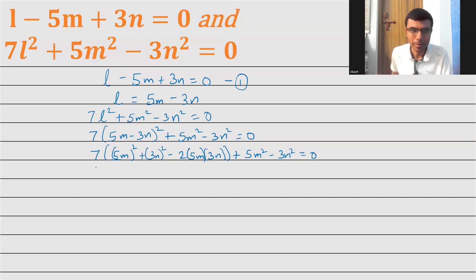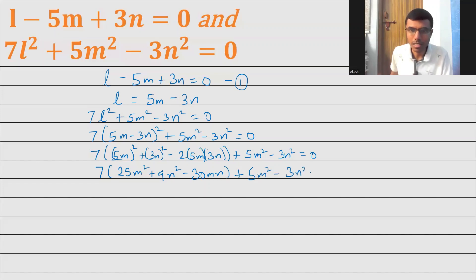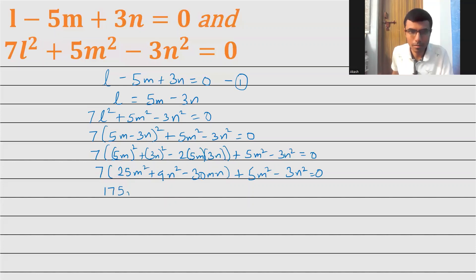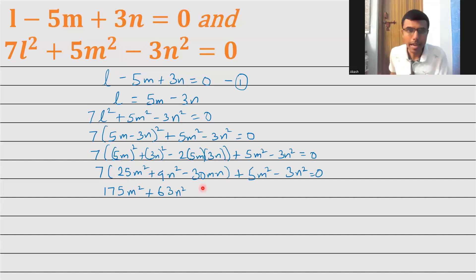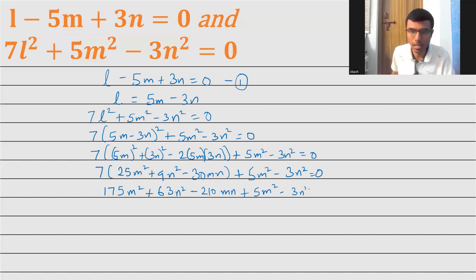Now let's continue simplifying. This would be nothing but 7 into 25m squared plus 9n squared minus 30mn, plus 5m squared minus 3n squared is equal to 0. Now multiply this out: 7 times 25 is 175, so 175m squared. 7 nines are 63, so 63n squared. Combined so far: 175m squared plus 63n squared minus 210mn plus 5m squared minus 3n squared equals 0. Now let's collect like terms: 175m squared plus 5m squared is 180m squared.